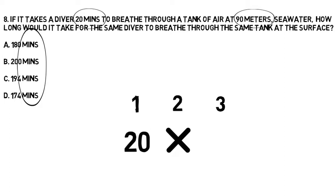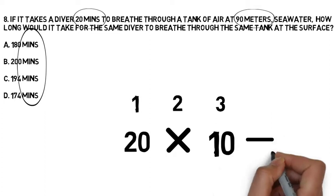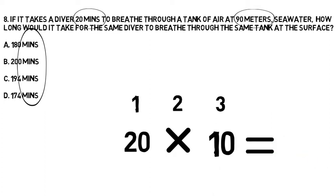Anyway, it's 90 metres, 10 atmospheres using the depth pressure chart. So we've got 20 times 10 equals what? That's our answer. Well, 20 times 10 equals 200. So the correct answer will be answer B, 200 minutes.